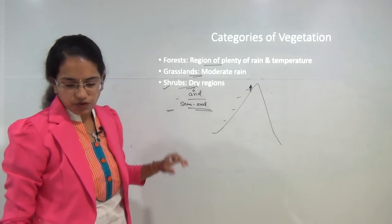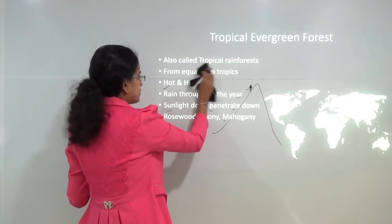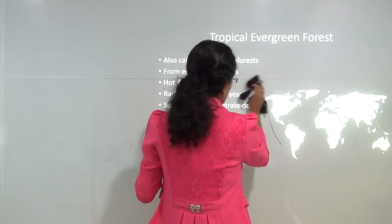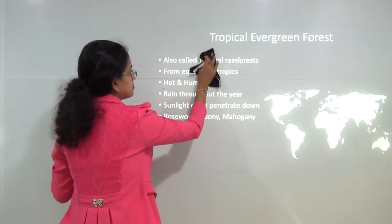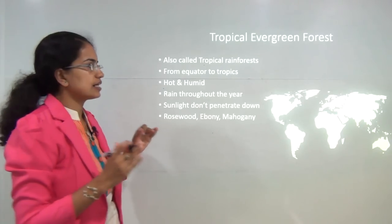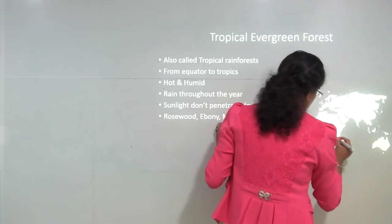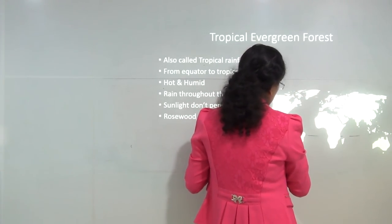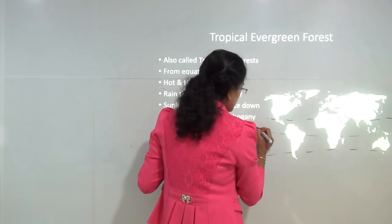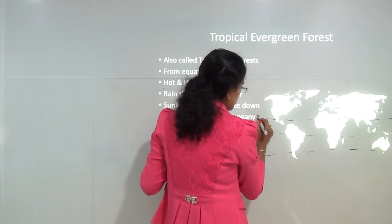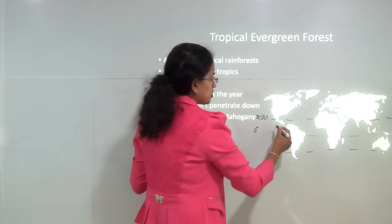Let's first start with forest. Among forests, the first type we will understand is the tropical evergreen forest. Understanding the terminology is important here — once you are clear with the terminology you won't face problems with the classification. The equator passes here, along with the Tropic of Cancer and the Tropic of Capricorn. The region between the equator and the tropics — approximately 23 and a half degrees north and south — is the tropical area.